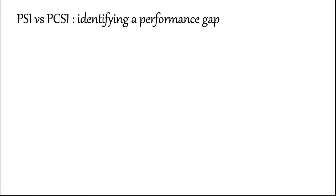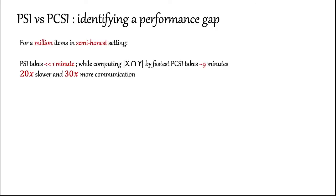We start by identifying a performance gap. Concretely, to compute the plain intersection of a million items in the semi-honest setting, the best runtime is well under a minute. In contrast, computing even the cardinality over the intersection by the fastest semi-honest PCSI protocol takes around 9 minutes. PCSI is 20 times slower and needs 30 times more communication. We want to bridge this gap.